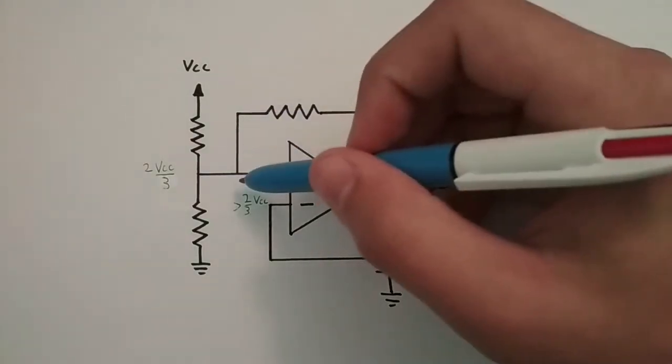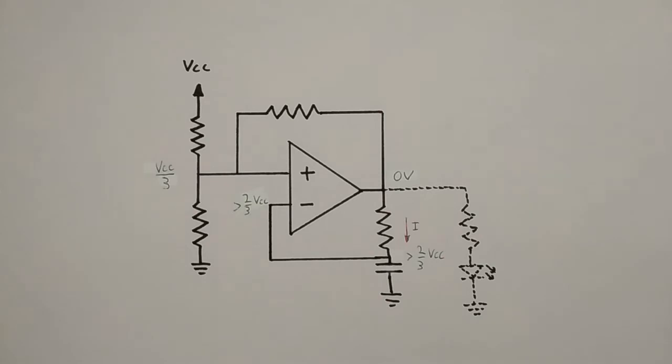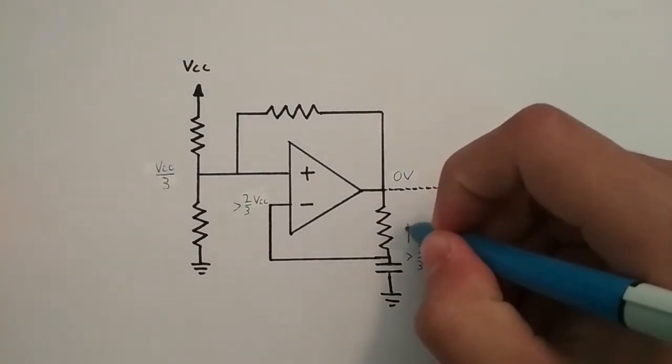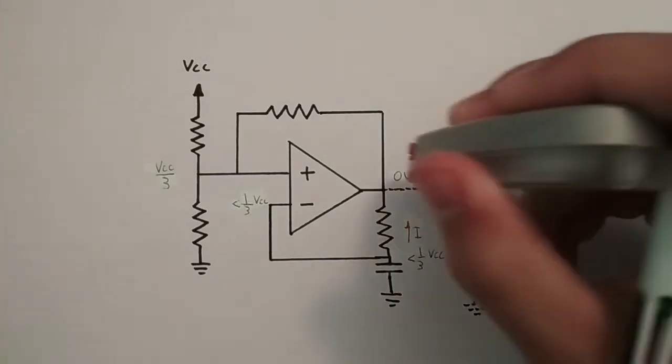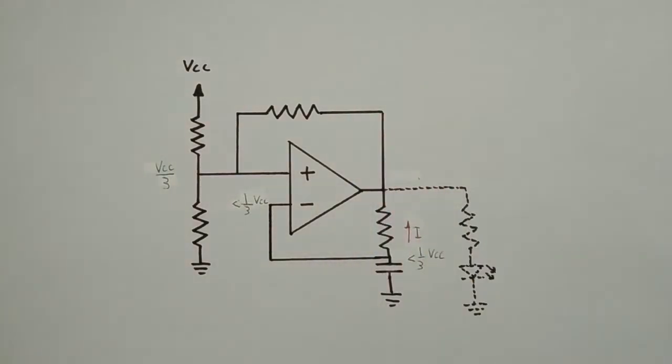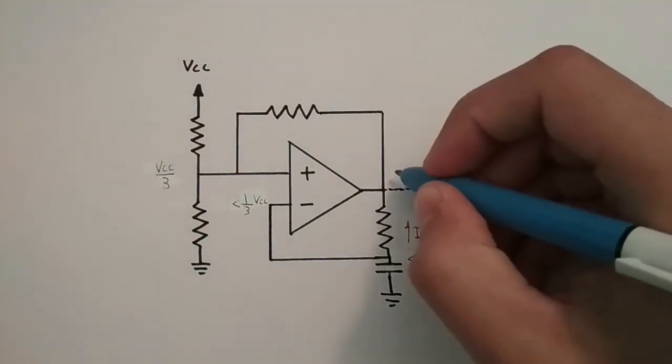This brings the non-inverting input to ⅓ Vcc through the feedback resistor and the capacitor starts discharging. When the capacitor voltage falls under ⅓ Vcc, the output goes back high and the cycle continues over and over.